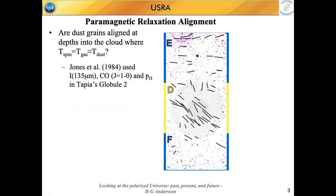Since this meeting has the word 'past' in its title, I wanted to spend one slide on discussing why Davis-Greenstein is not the right mechanism for grain alignment. Davis-Greenstein is a beautiful theory full of intriguing and intricate physics and mathematics, and it had enough wiggle room in its parameters that it was really hard to disprove. But the fundamental prediction that must hold for Davis-Greenstein to work — pointed out by Jones and Spitzer already in 1967 — is that when the gas and dust temperatures equilibrate, the alignment must go away.